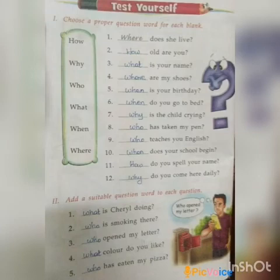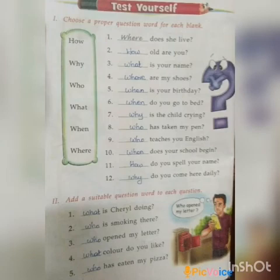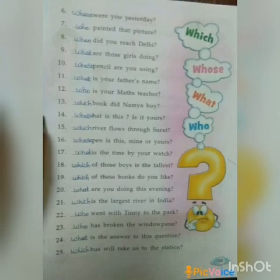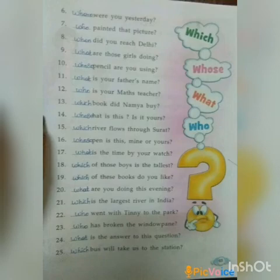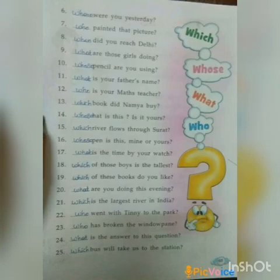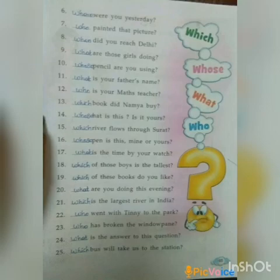Exercise 2: Add a suitable question word to each question. 1. What is she doing? 2. Who is smoking? 3. Who opened my letter? 4. What color do you like? 5. Who has eaten my pizza? Take page number 65. 6. Where were you yesterday? 7. Who painted the picture? 8. When did you reach Delhi? 9. What are those squirrels doing? 10. Whose pencils are these? 11. What is your father's name? 12. Who is your maths teacher? 13. Which book did Nanya buy? 14. Whose hat is this? It is yours.